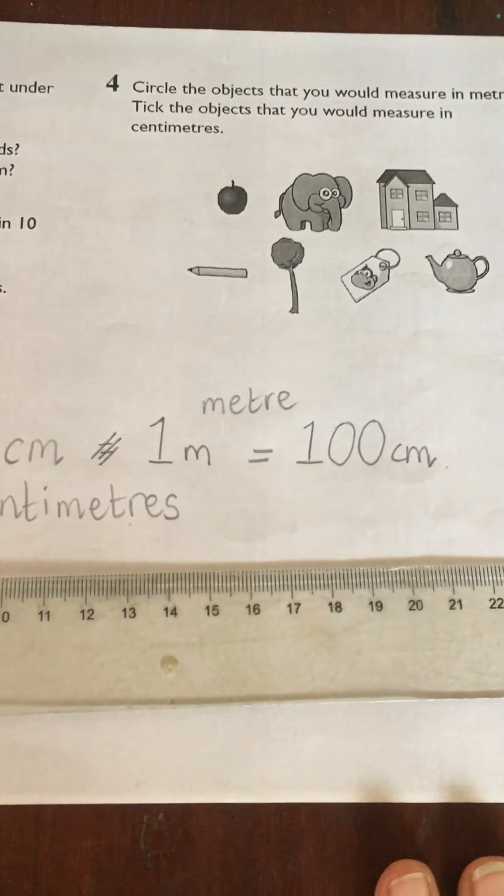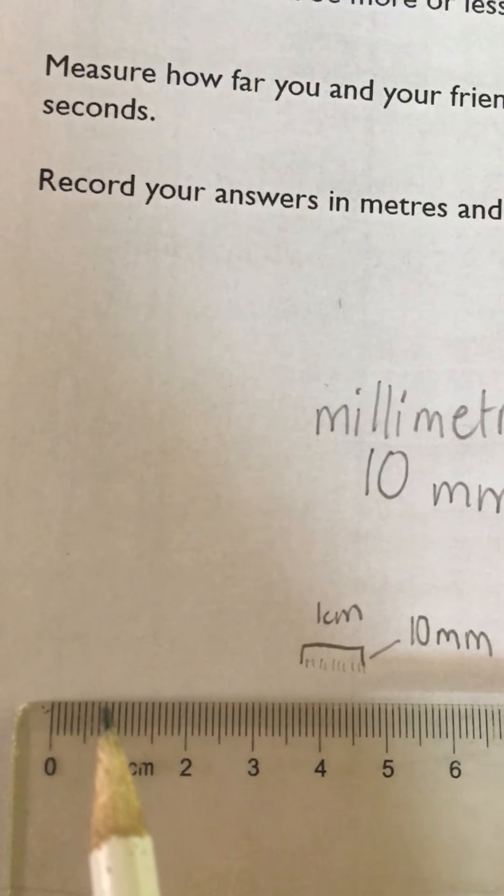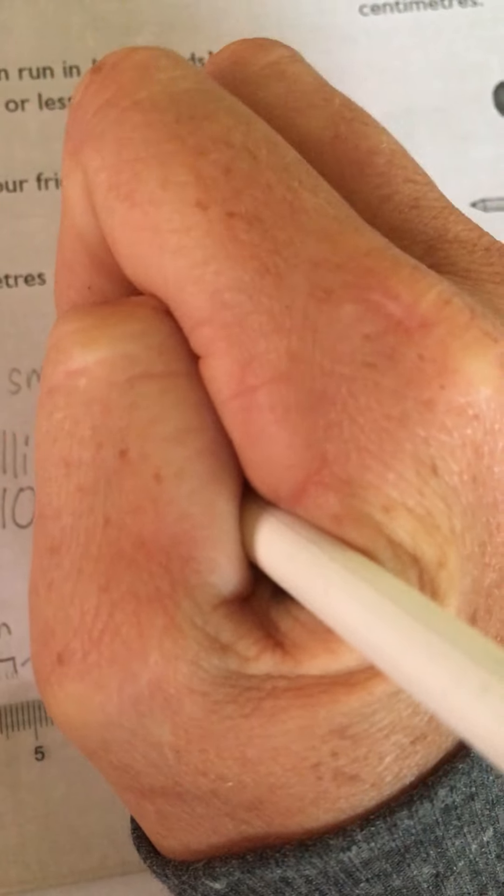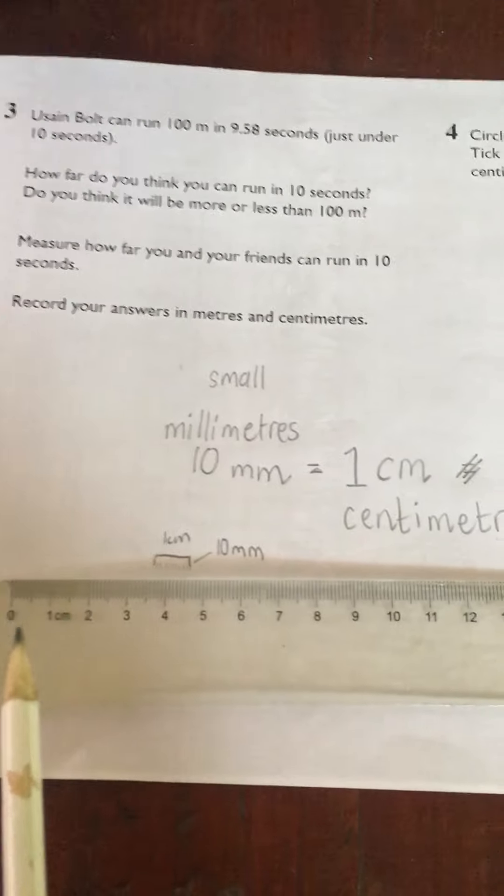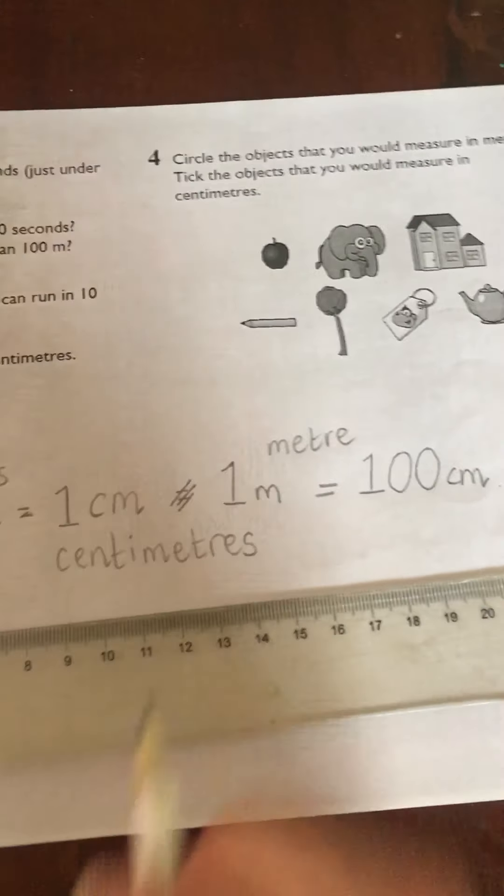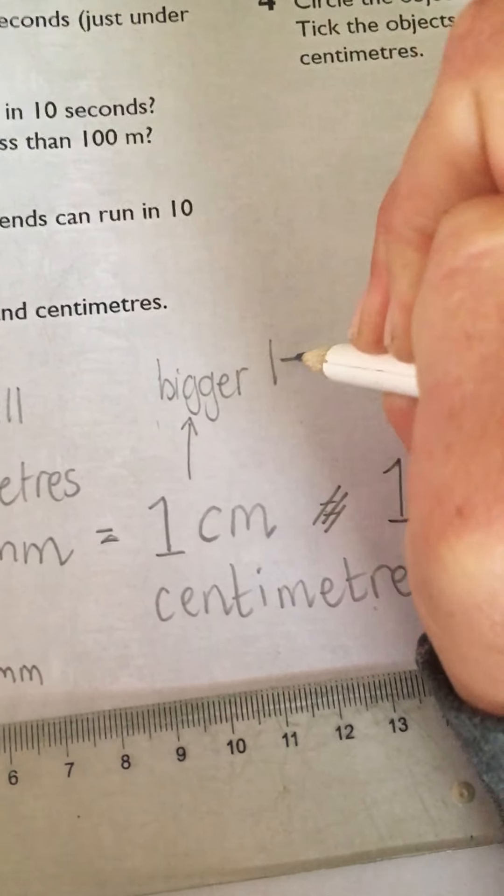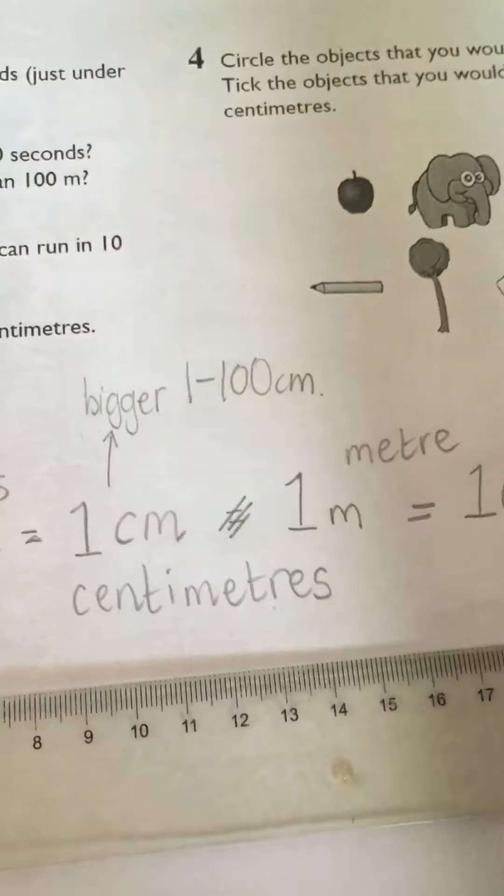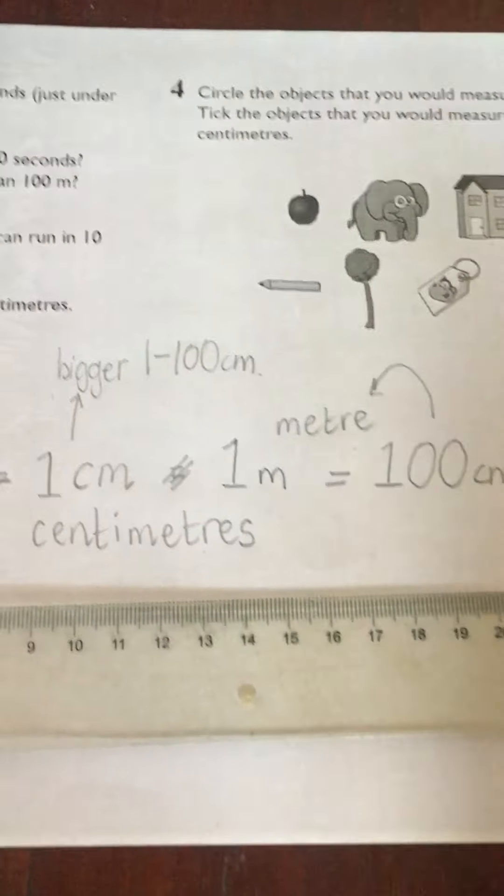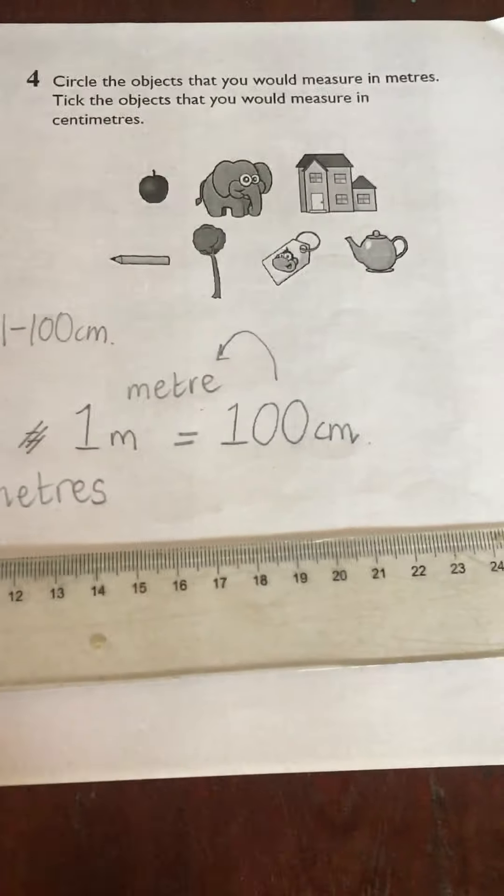Some things that are really small - if they were like up to here - we would measure it in millimeters because it's so small. Centimeters could be anything up to 100 centimeters. If it's not to 100 centimeters, we will measure it in centimeters. Anything over 100 centimeters will be measured in meters.